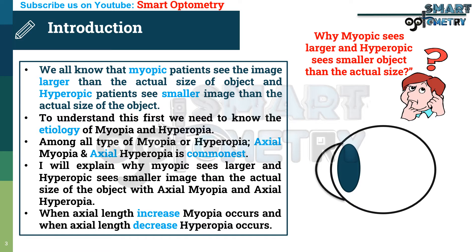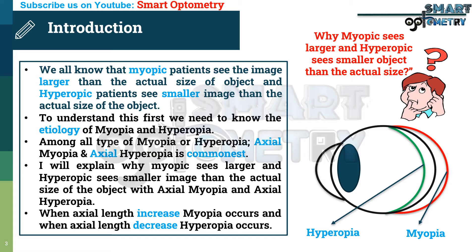When axial length increases, myopia occurs, and when axial length decreases, hyperopia occurs.